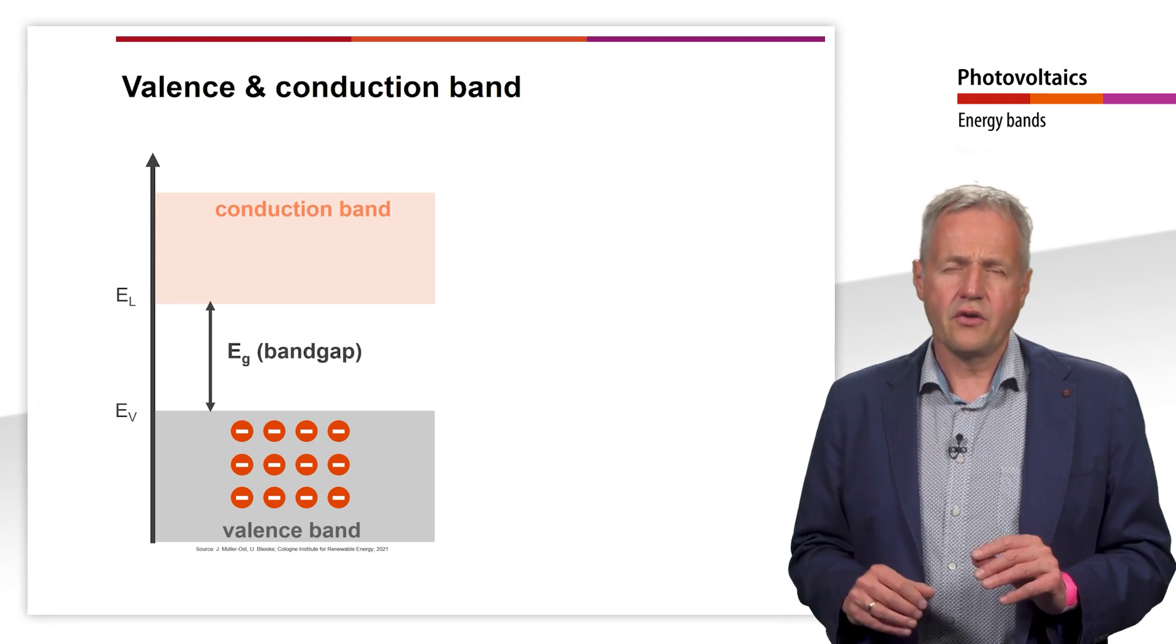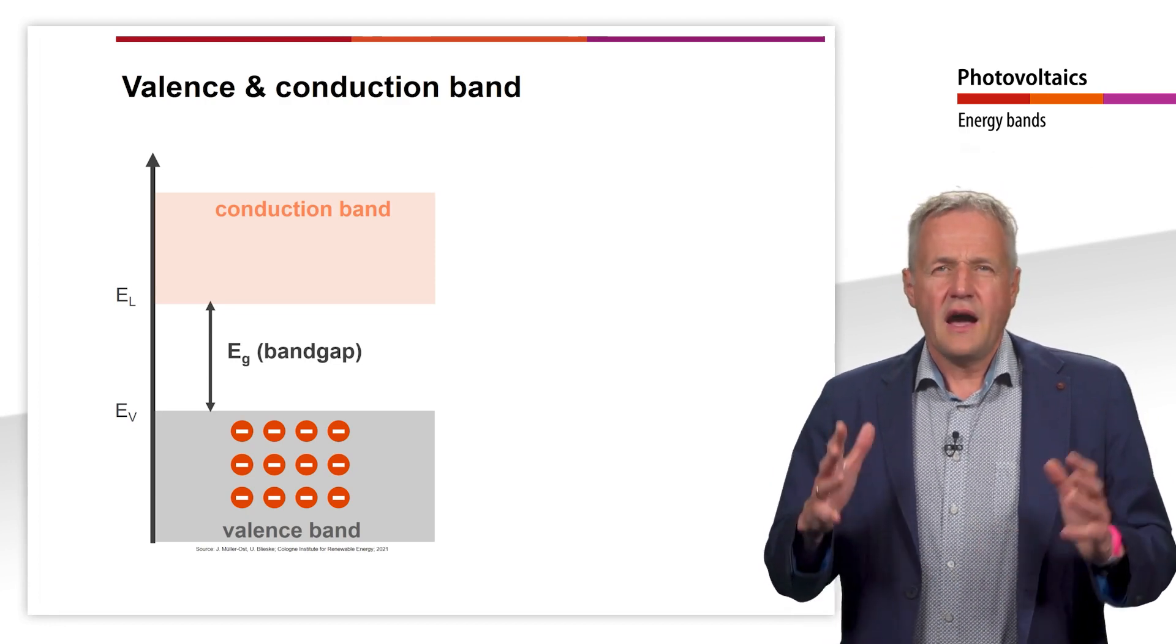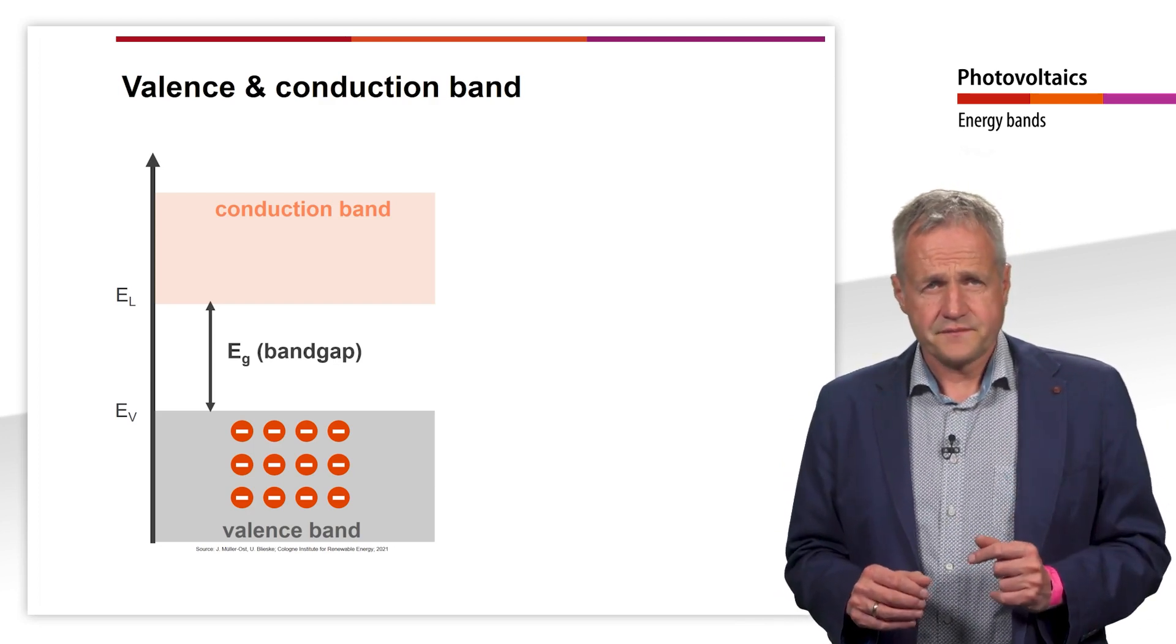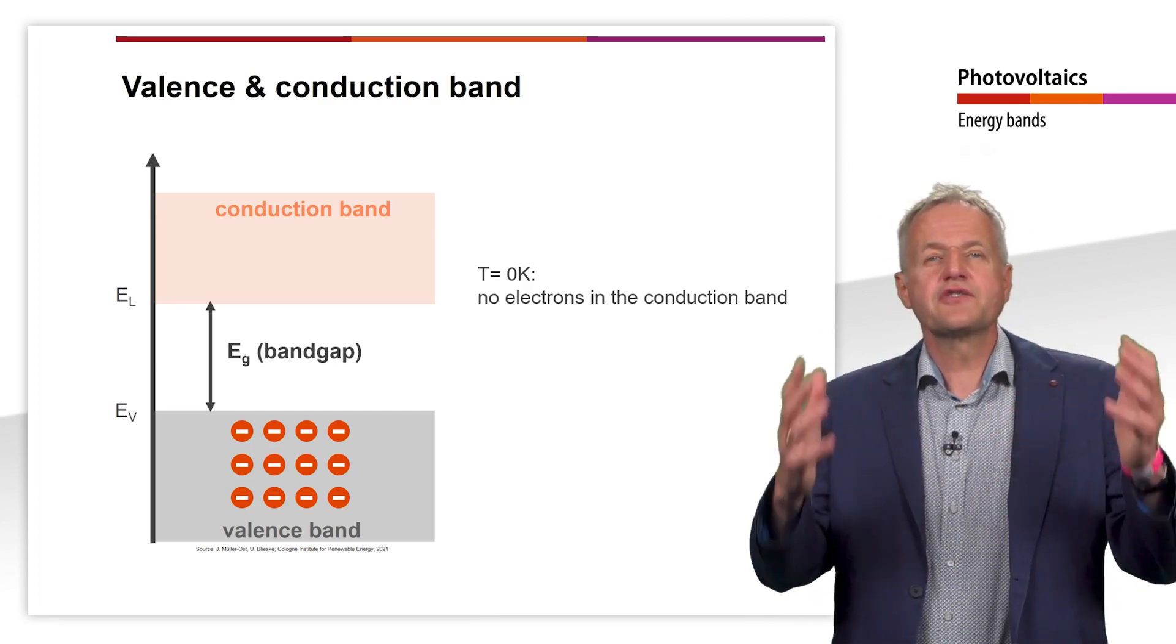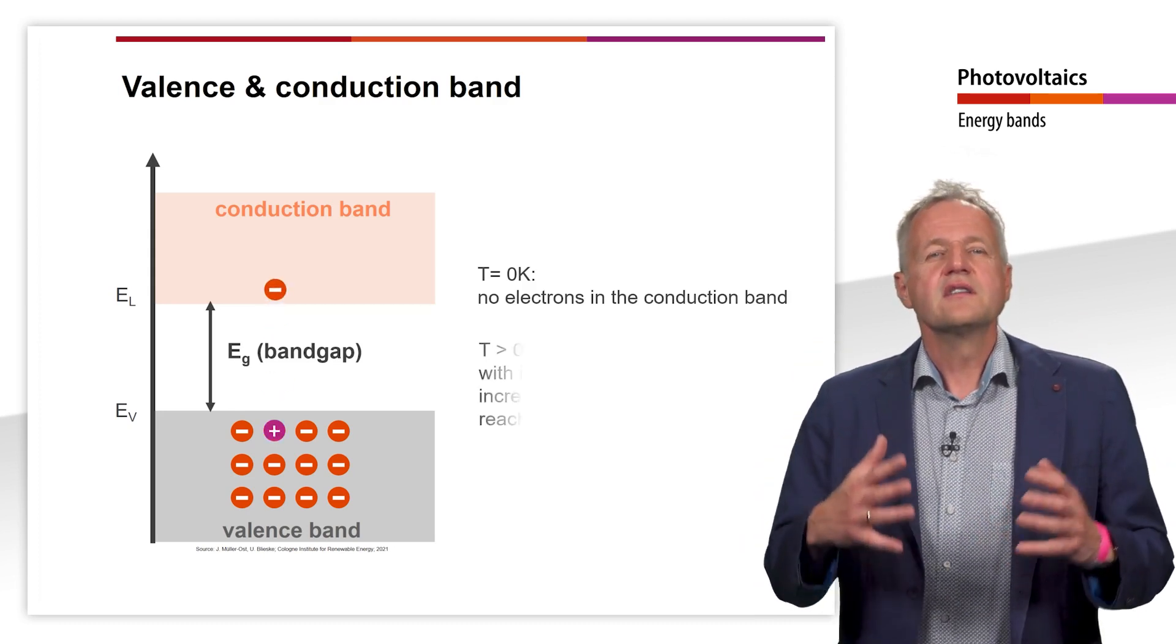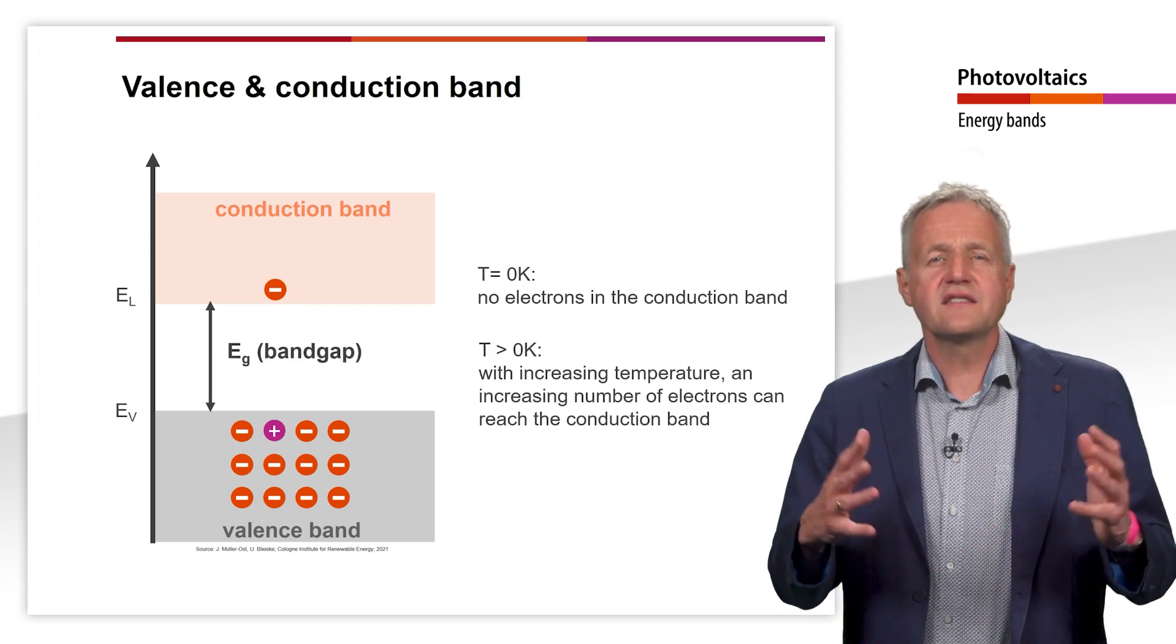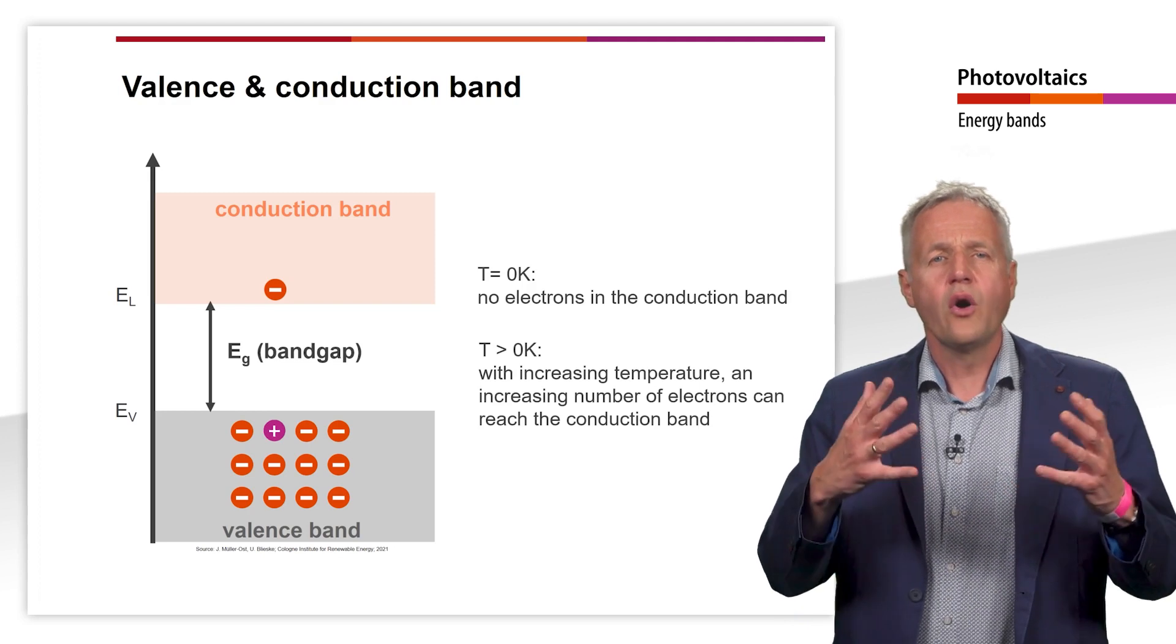At a temperature of zero Kelvin, that is at absolute zero, there are no electrons in the conduction band of the silicon crystal. As the temperature rises, individual electrons are excited and can enter the conduction band. These electrons can leave unoccupied energy states in the valence band. The unoccupied energy states are called holes.